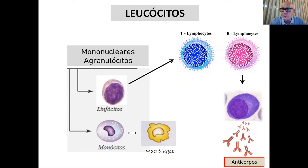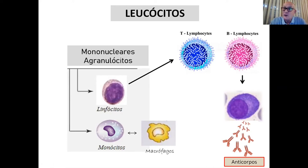A presença dessas proteínas tem relação direta com a função — elas têm funções muito diferentes. As imunoglobulinas estão na superfície dos linfócitos B. Quando o linfócito B é ativado, ele se diferencia, formando uma célula com citoplasma muito grande, rico em retículo endoplasmático rugoso, e secreta essas imunoglobulinas que passamos a chamar de anticorpos.